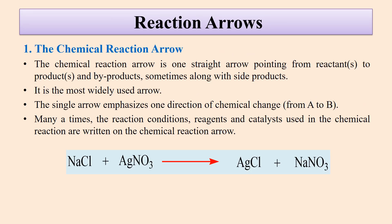The first is the reaction arrow, also called the chemical reaction arrow. It is a single-headed arrow pointing from reactants to the products and by-products, sometimes along with side products. It is the most widely used arrow. The single arrow emphasizes one direction of chemical change. Many times the reaction conditions, reagents, and catalysts used in the chemical reactions are written on the chemical reaction arrow.